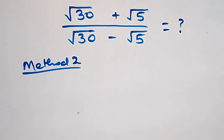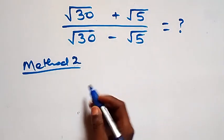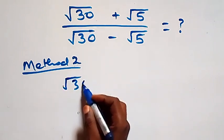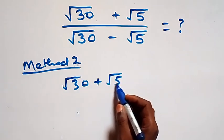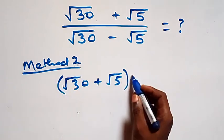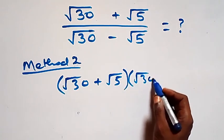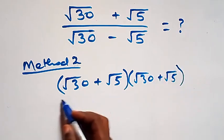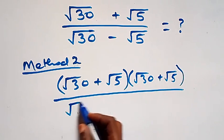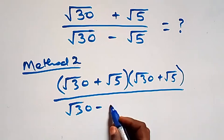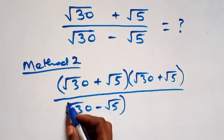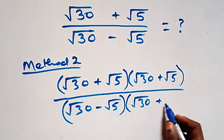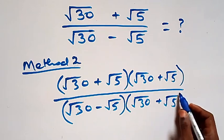For the second method, we rationalize the original expression directly by multiplying by the conjugate, which is root 30 plus root 5. Both numerator and denominator are multiplied by root 30 plus root 5.